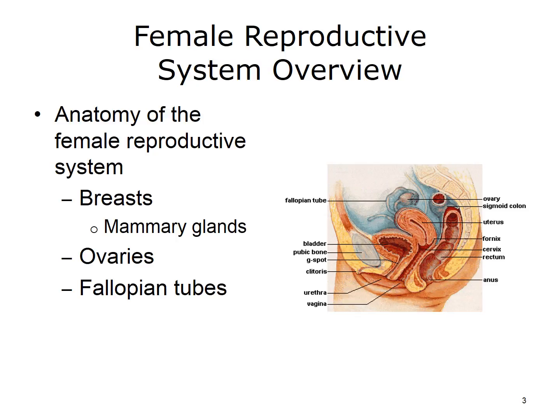The reproductive systems in the male and female are concerned with producing new members of our species. The Female Reproductive System consists of internal and external genitalia. The internal reproductive organs consist of the ovaries, uterus, fallopian tubes, and the vagina, as shown in the slide.